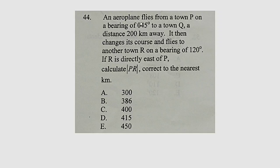An airplane flies from town P on a bearing of 45 degrees to another town Q, a distance of 200 km away. It then changes its course and flies to another town R on a bearing of 120 degrees. If R is directly east of P, we are asked to calculate the distance between P down to R, correct to the nearest kilometer.